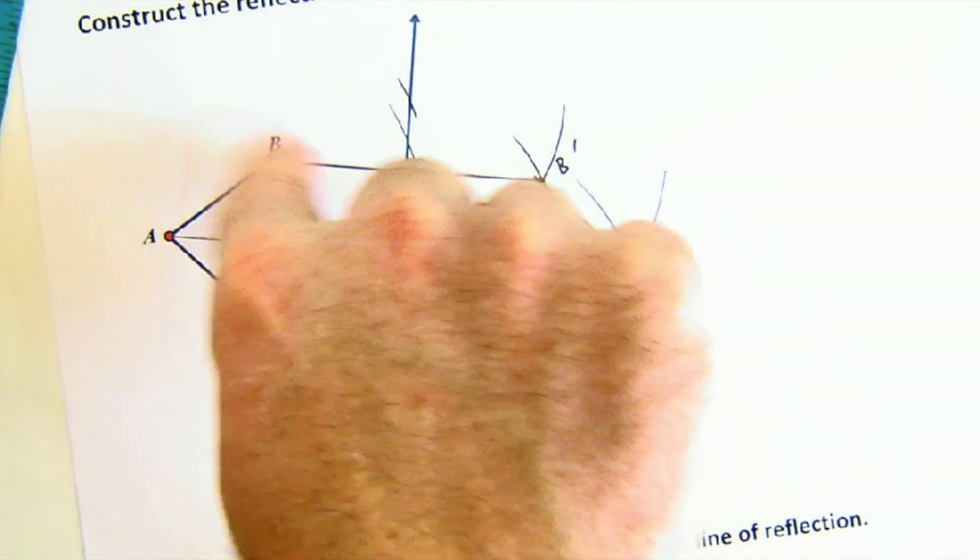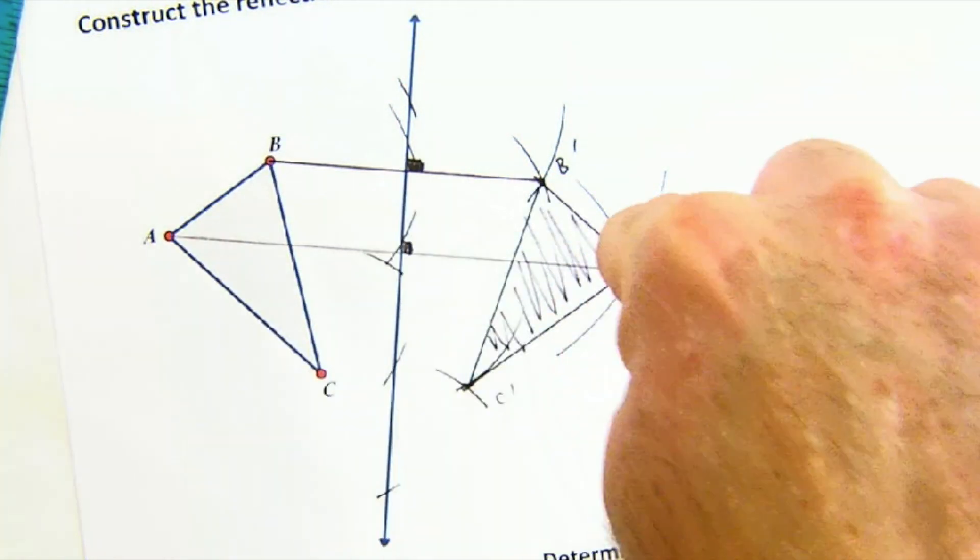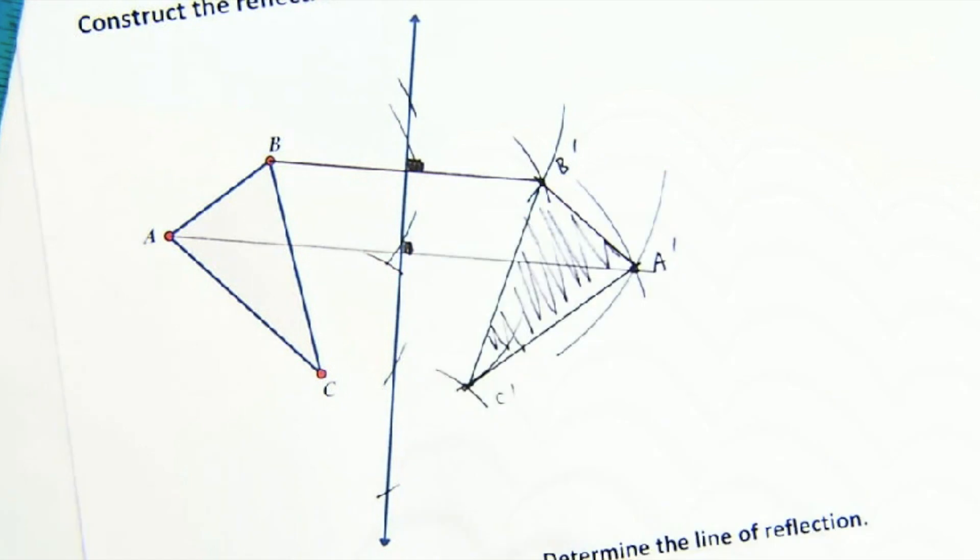we have a beautiful reflection of triangle ABC. Notice again, ABC clockwise naming. A prime, C prime, B prime clockwise naming. A reversal of orientation.